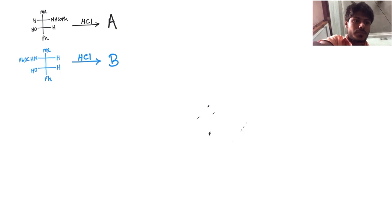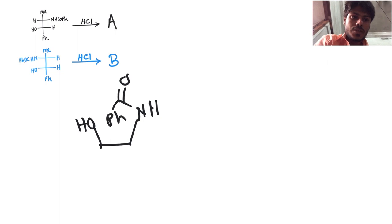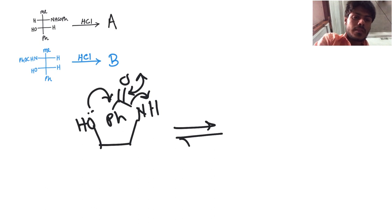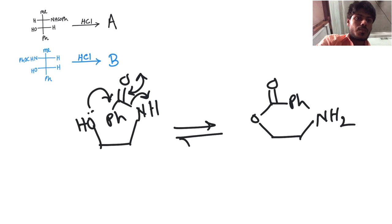If you have a simple system where you have an OH group and adjacent to that you have NH-CO-Ph, there is a continuous rearrangement. The benzoyl group migrates from the nitrogen side to the oxygen side, and that nitrogen becomes free as NH2, and vice versa. So there is a continuous migration from nitrogen to oxygen.